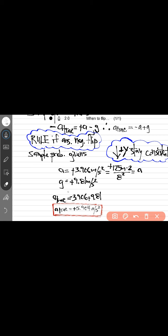We have negative a, which is minus 3.906, plus G, which is plus 9.81, and you get plus 5.904 meters per second squared. That's your acceleration vector of your tractor beam.